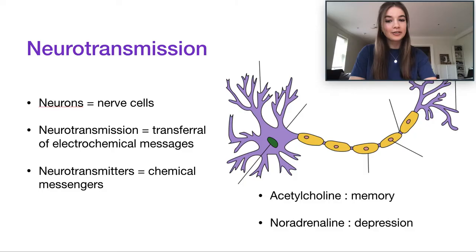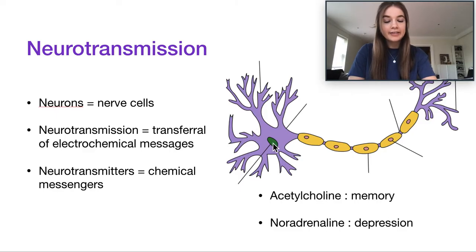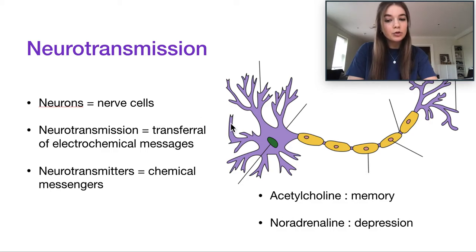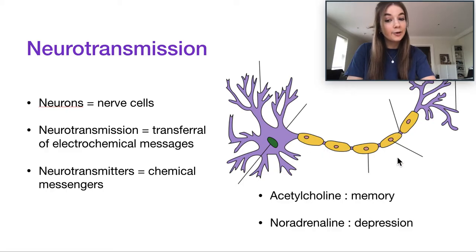You might have seen what a neuron looks like before — we can see it here on the screen. At one end we have the body of the neuron, and in the middle is the cell nucleus, which is the control center of the cell. The branches that come out from the cell body are the dendrites, which pick up messages from other neurons. The message then passes along the axon, which is covered in yellow cells that speed up neurotransmission, down to the terminal branches and terminal buttons at the end.